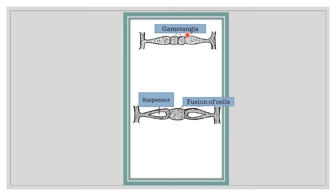The xenogametangium contains several dense multinucleate cytoplasmic masses known as xenogametes. The suspensor has vacuolated cytoplasm and very few nuclei. At this stage the walls between the two gametangia dissolve, so that the two xenogametes undergo fusion, forming a xenozygote.